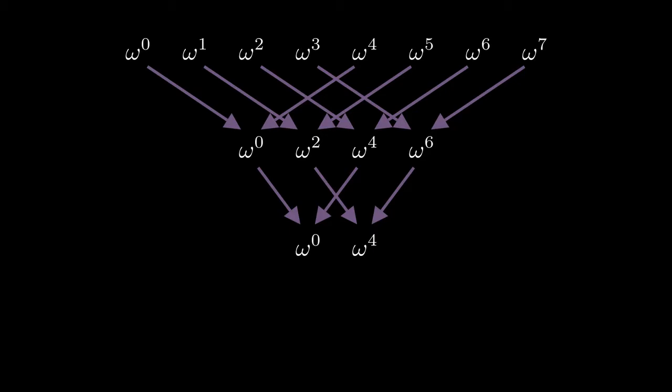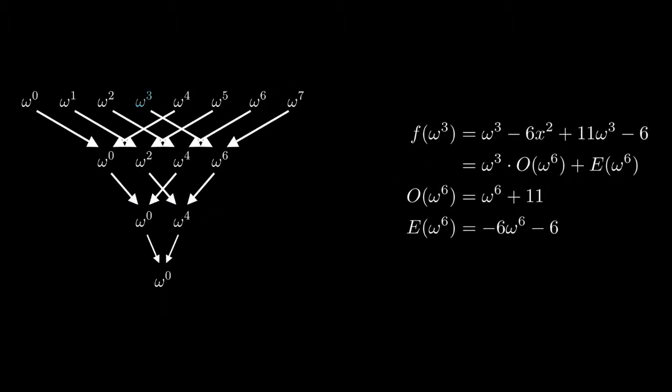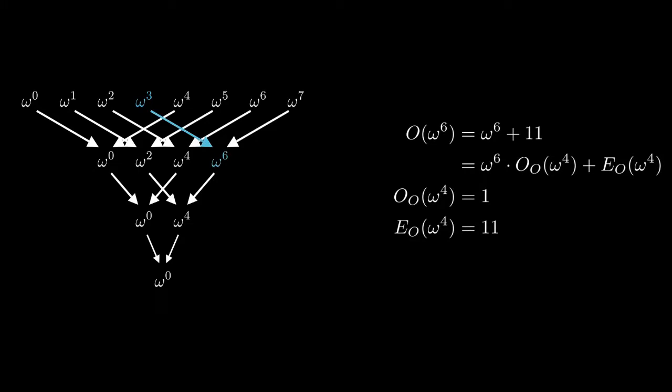We can draw a tree that shows how this works. Each polynomial evaluation at the top gets split into two sub-problems, and on and on down the tree. For a random set of points, this wouldn't really help, but the brilliant choice of the roots of unity allows us to reuse results over and over again. Let's show how this works for f and omega cubed, the third out of the eighth roots of unity. We first break f into two pieces, which we now want to evaluate at omega to the sixth. Now, we break into two sub-pieces again, which are operating on omega to the sixth squared, or omega to the fourth. At this point, we're just left with constant terms when we break things apart. After evaluating those, we go back up the tree, at each step multiplying the odd result by x and adding them together.